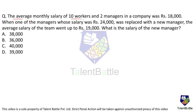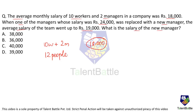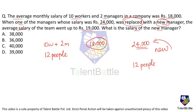The average monthly salary of 10 workers and 2 managers in a company was Rs. 18,000. When one of the managers whose salary was Rs. 24,000 was replaced with a new manager, the average salary went up to Rs. 19,000. There are 12 people in total. If the new manager's salary were also 24,000, the average would remain at 18,000.